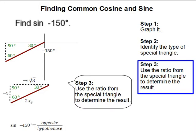So now with this triangle I can use my ratio to find sine of negative 150 degrees. And sine is opposite over hypotenuse. So opposite, now I'm going to look at it from this angle. Opposite is negative x. And then hypotenuse is 2x.